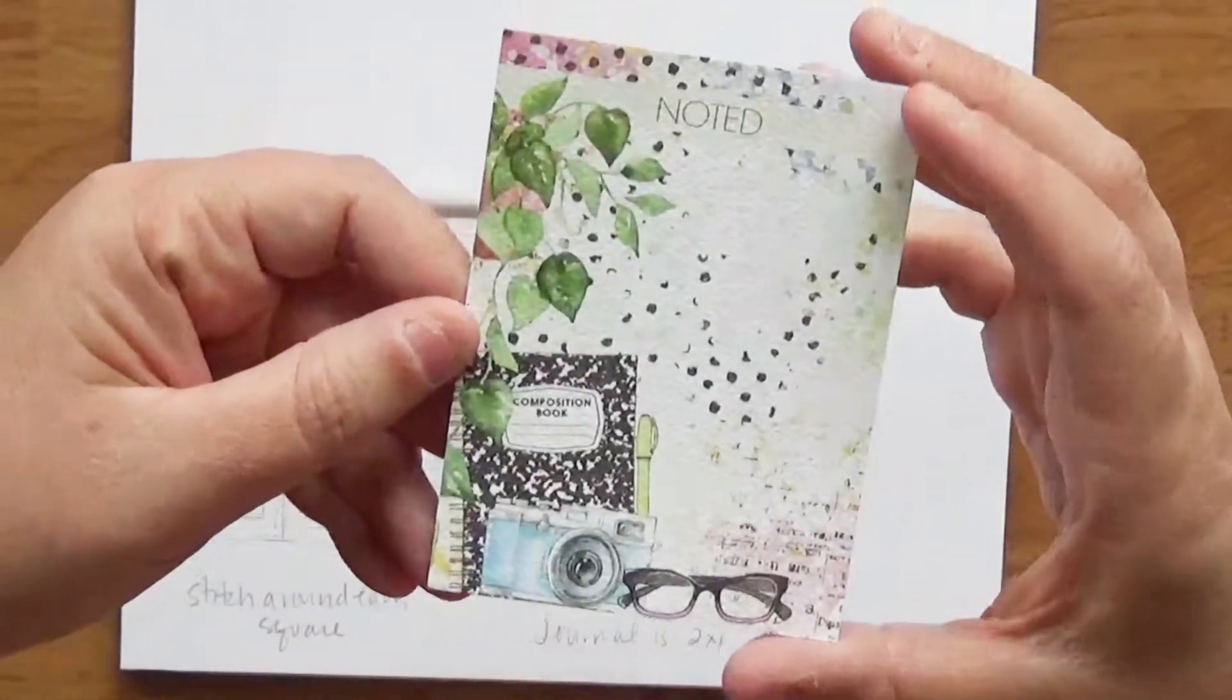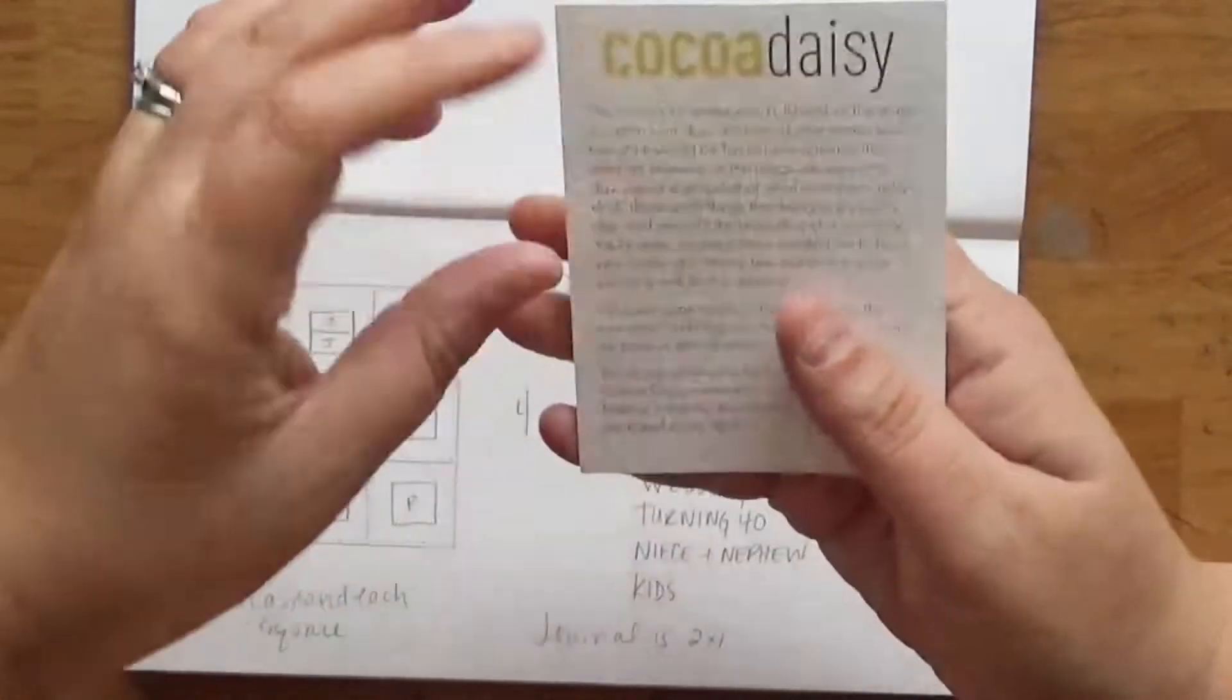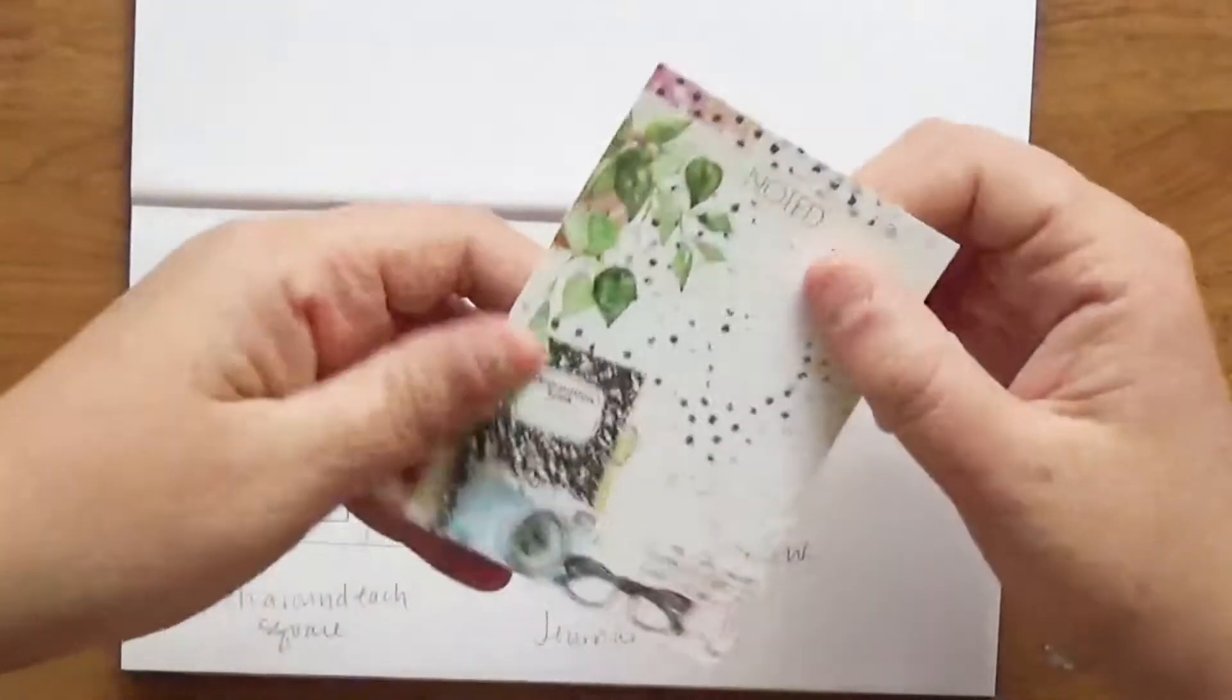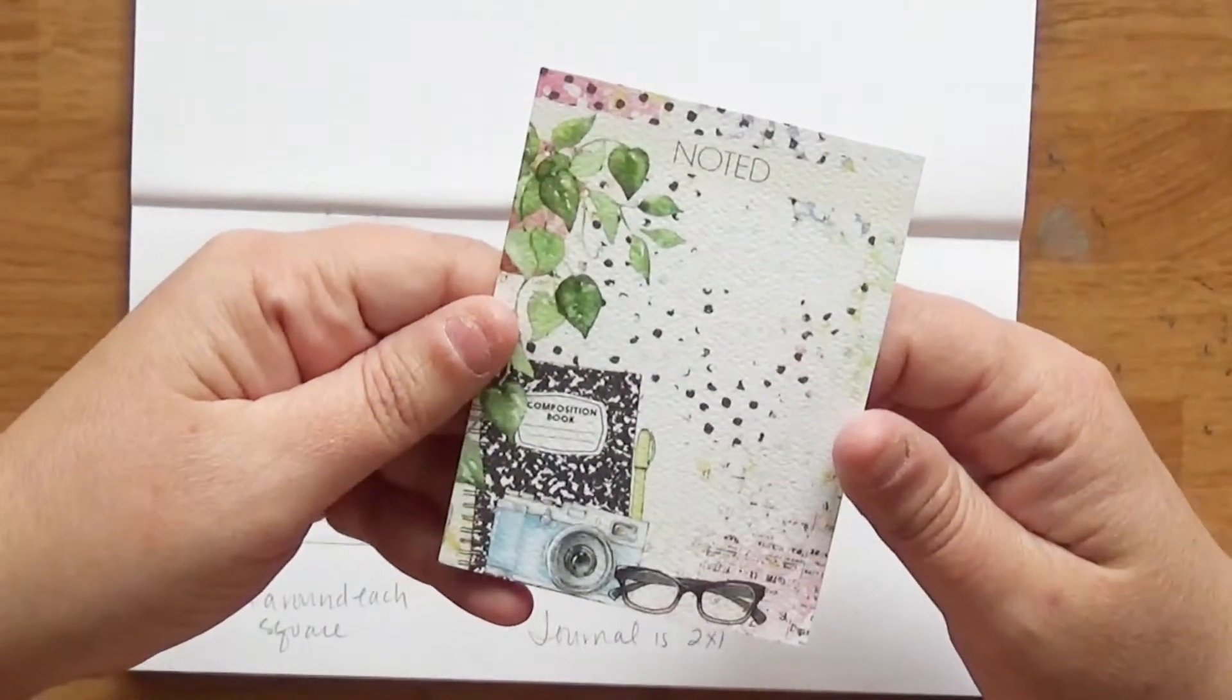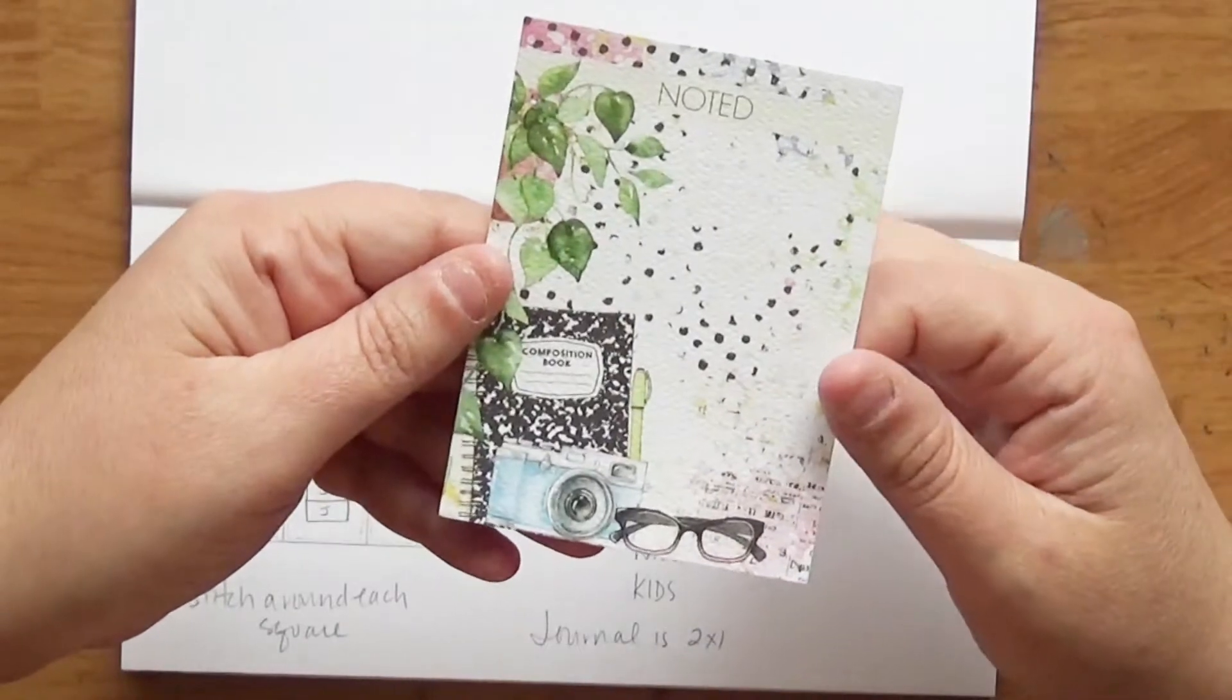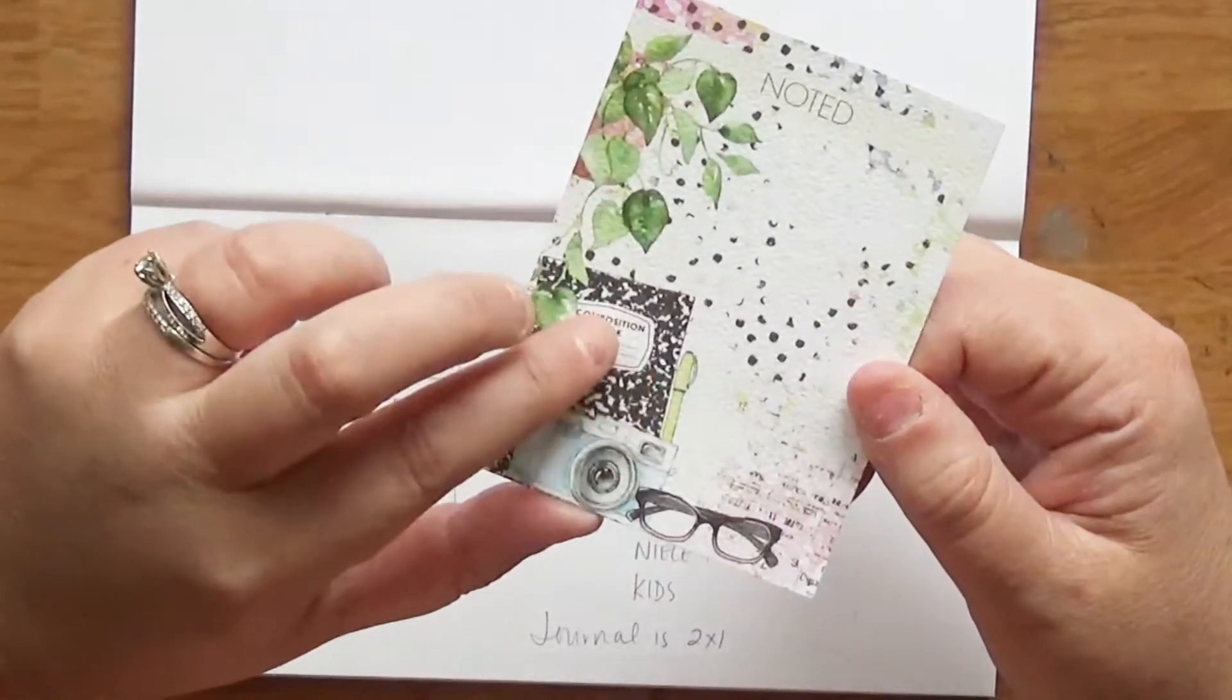So you can see here, this is the cover card and the pocket card that comes with a little note. You can see the colors and the graphics really well in this card. It's got some beautiful pastel colors, pinks and greens, and this beautiful little composition notebook.